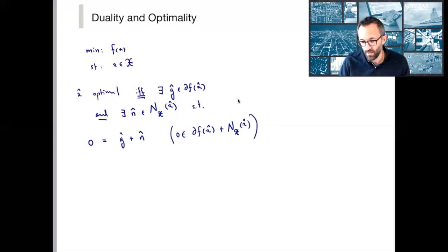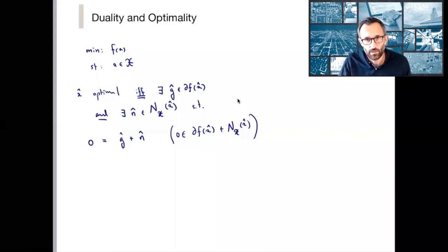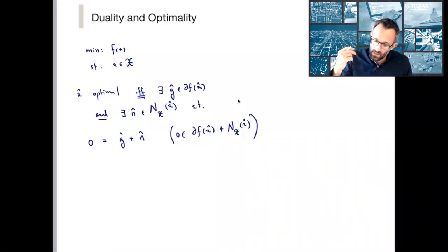Writing this membership is just, I just separated it by writing there exists a g-hat and there exists an n-hat. And the reason that I wrote it in that particular way is that the dual optimization problem is really that search for a g-hat and an n-hat, saying that there exists.